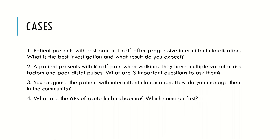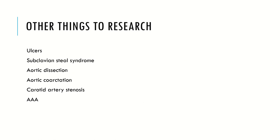To summarize, other things you might want to research to complete your vascular revision: ulcers — arterial, venous, or neuropathic; subclavian steal syndrome; aortic dissection and aortic coarctation; carotid artery stenosis, which may be covered in your stroke revision; and AAA — not just the presentation but also the diagnosis and screening program within the UK. Thank you very much for watching, and leave any questions below.